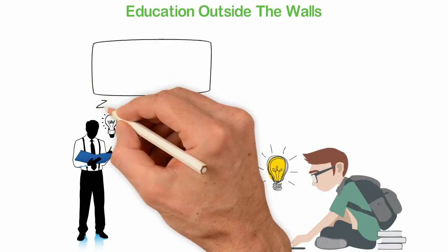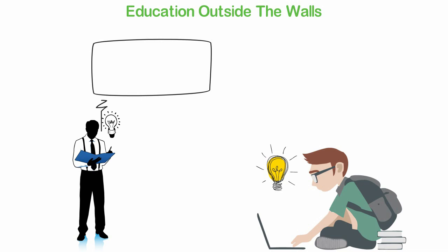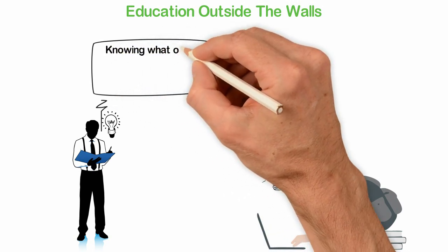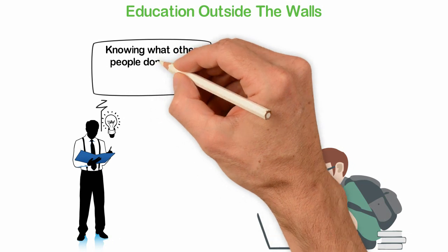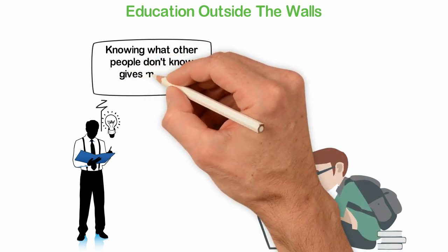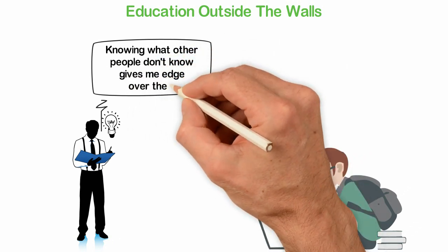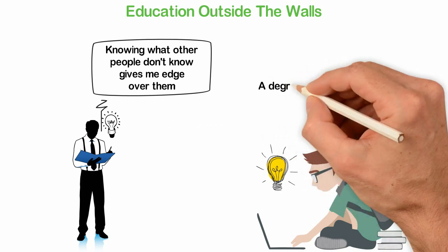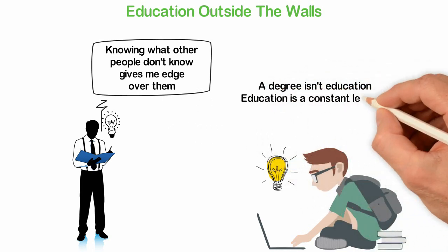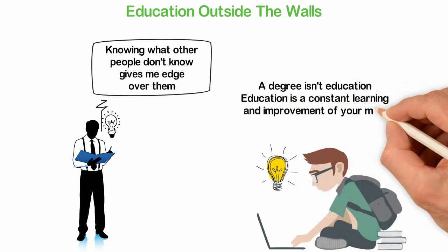Though school programmed you to believe that when you have a degree you're educated, the truth is that the day you stop getting an education is the day you stop taking your bath. As long as you take your bath every day, you ought to improve your mind every day. A degree isn't education. Education is a constant learning and improvement of your mind.